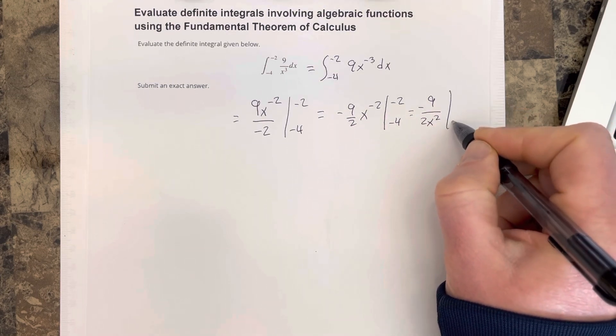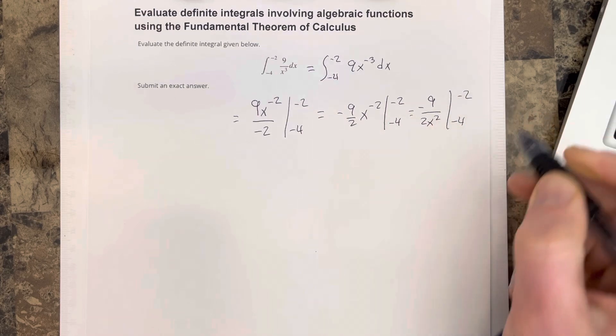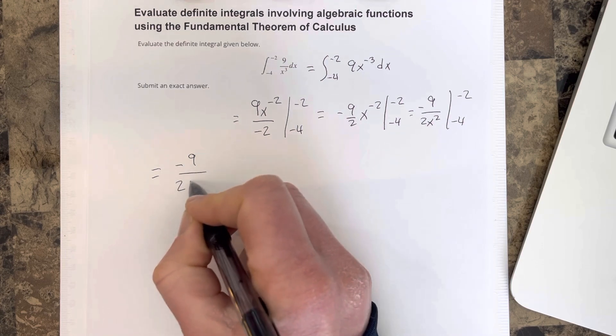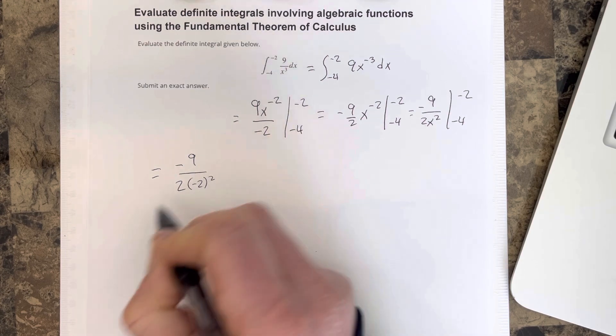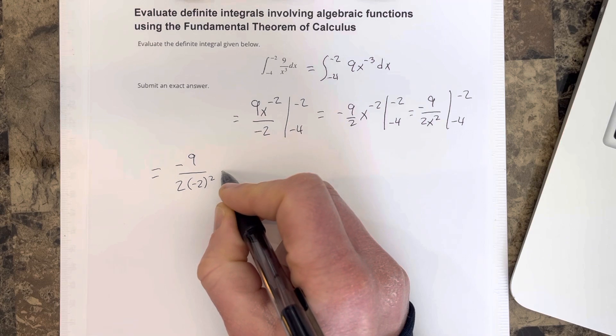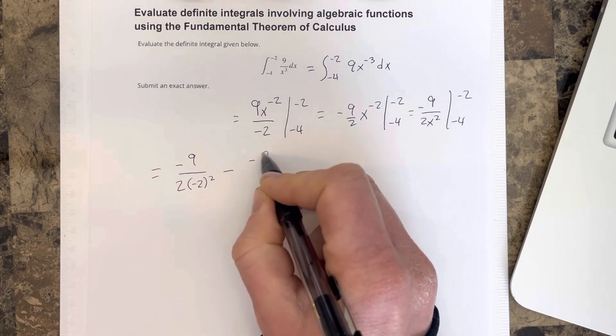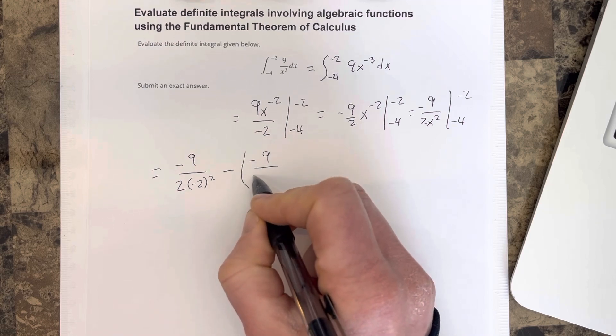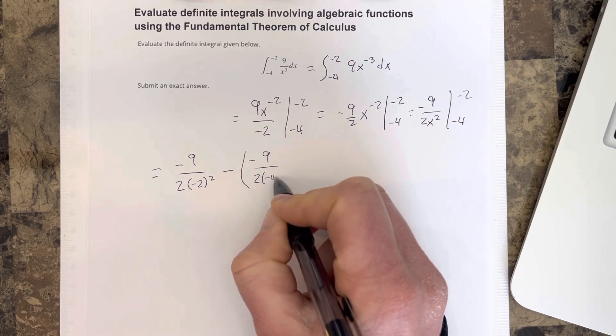evaluating from negative 4 to negative 2. So we're going to get negative 9 over 2, negative 2 squared, minus negative 9 over 2 times negative 4 squared.